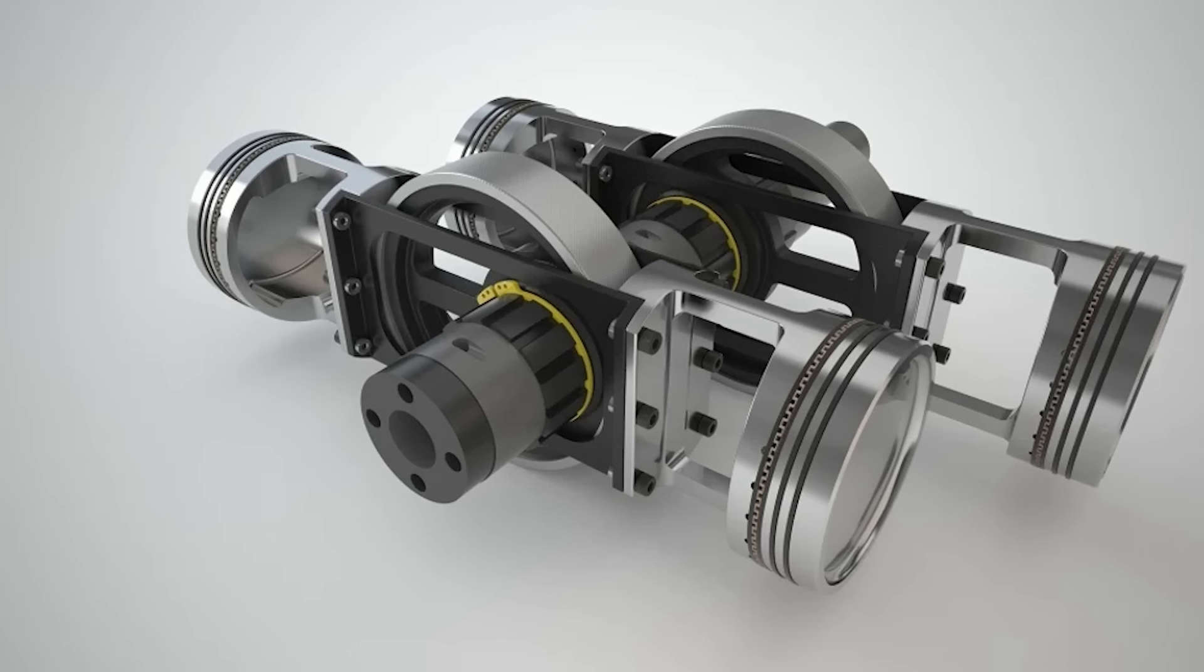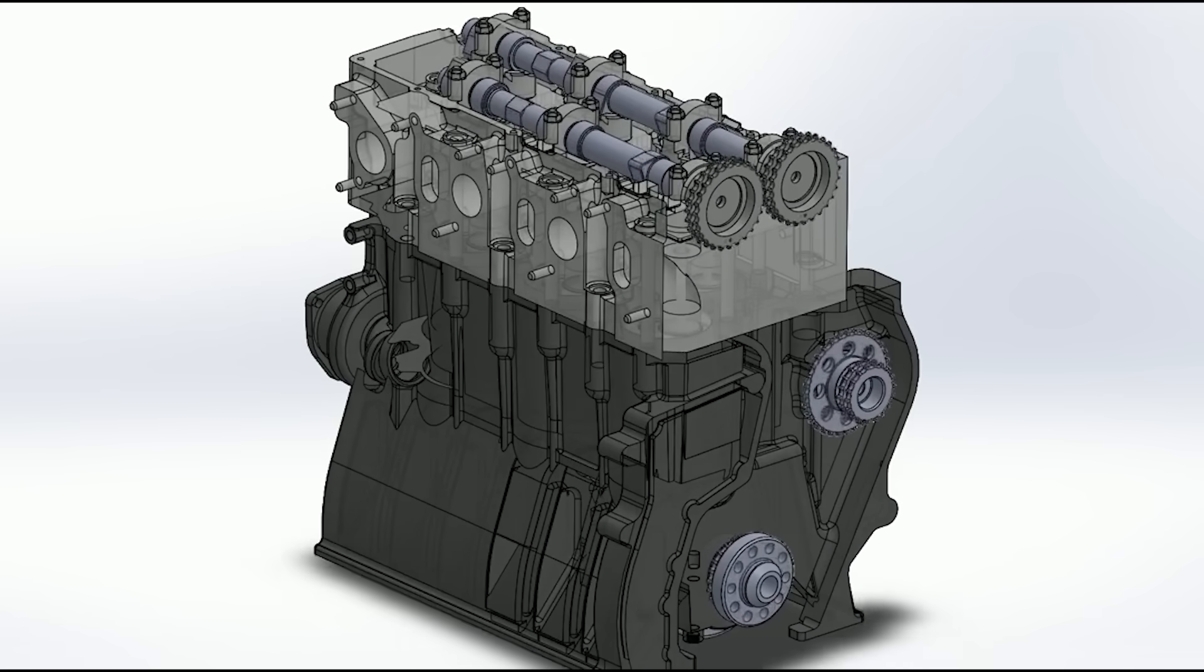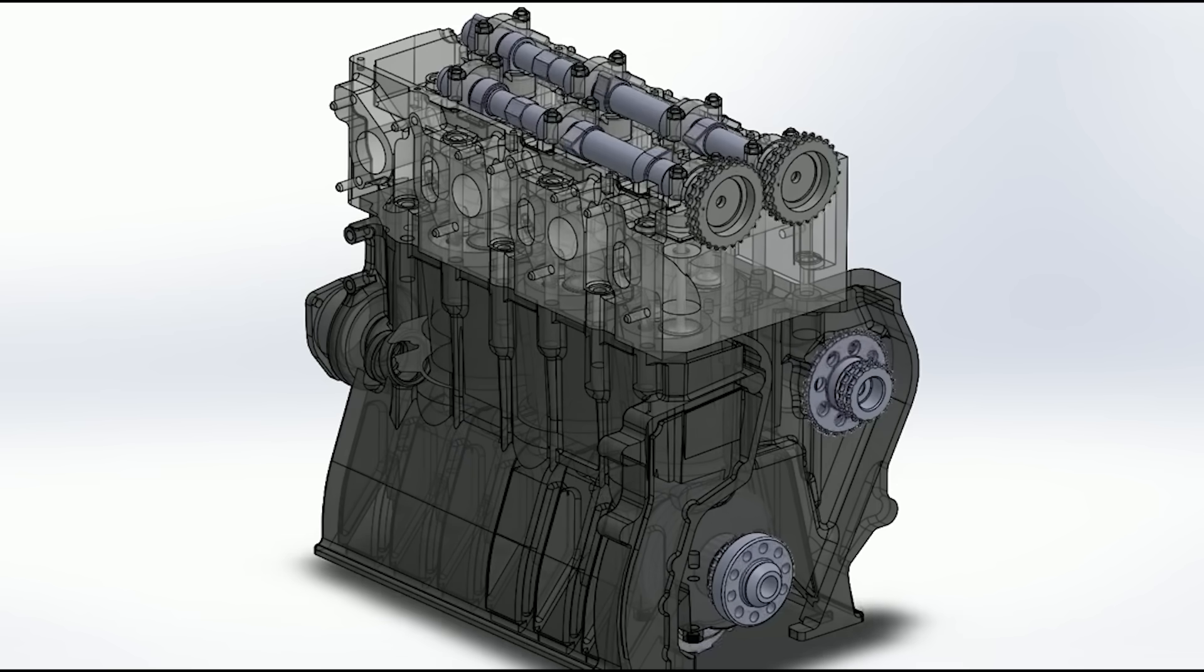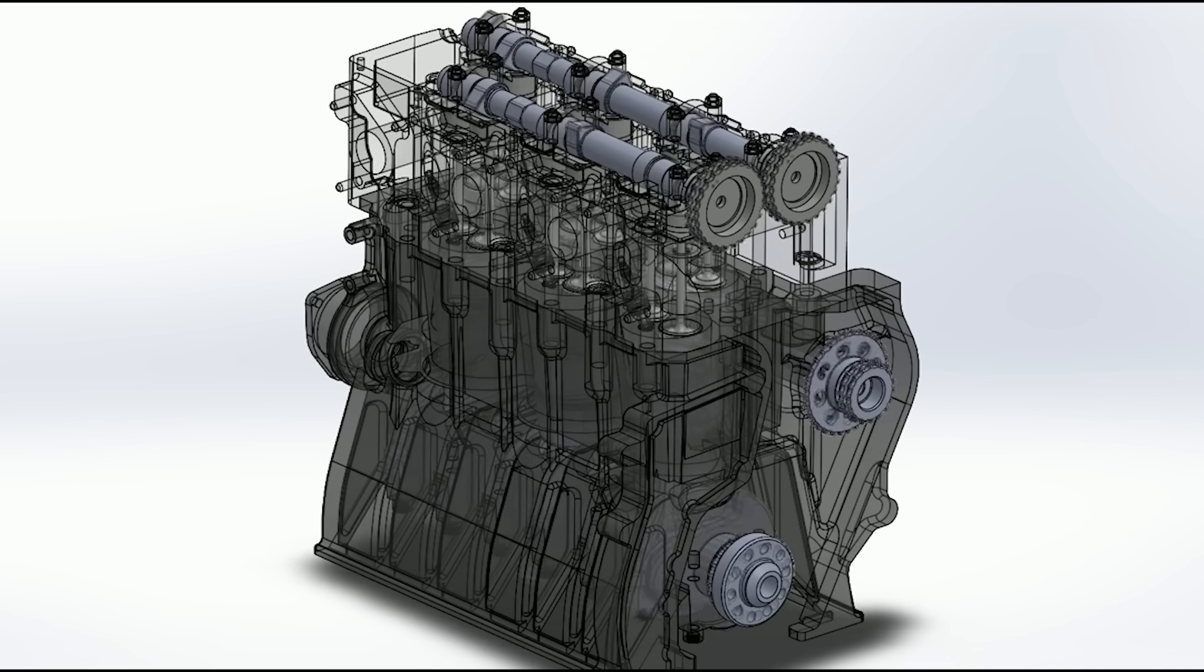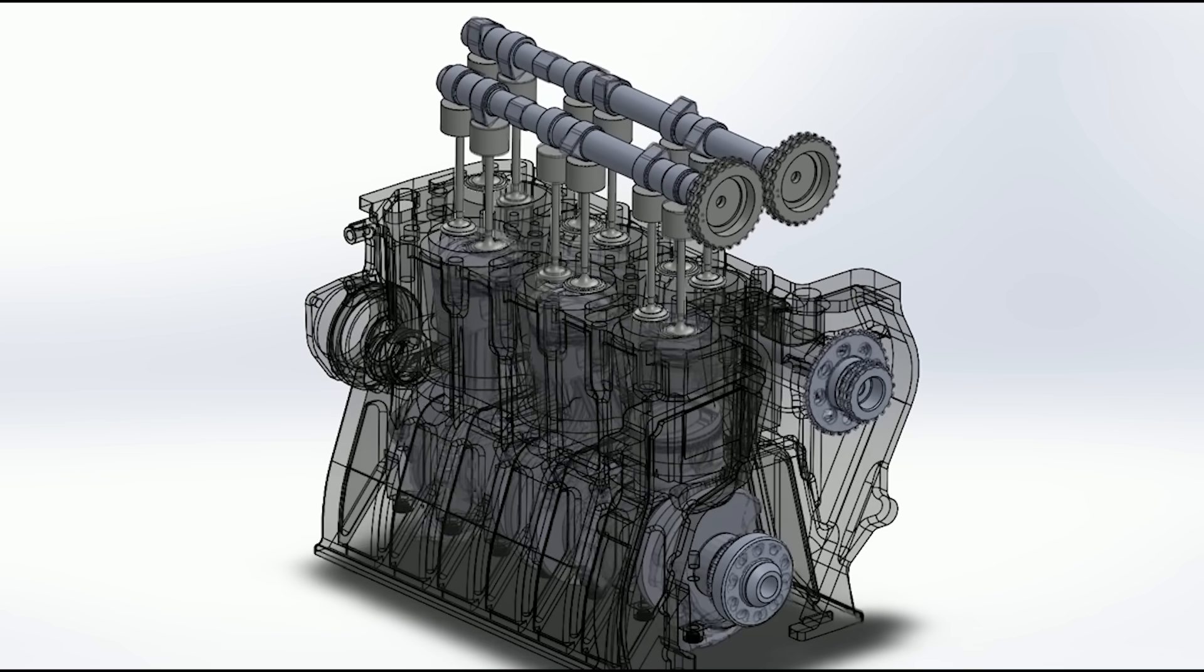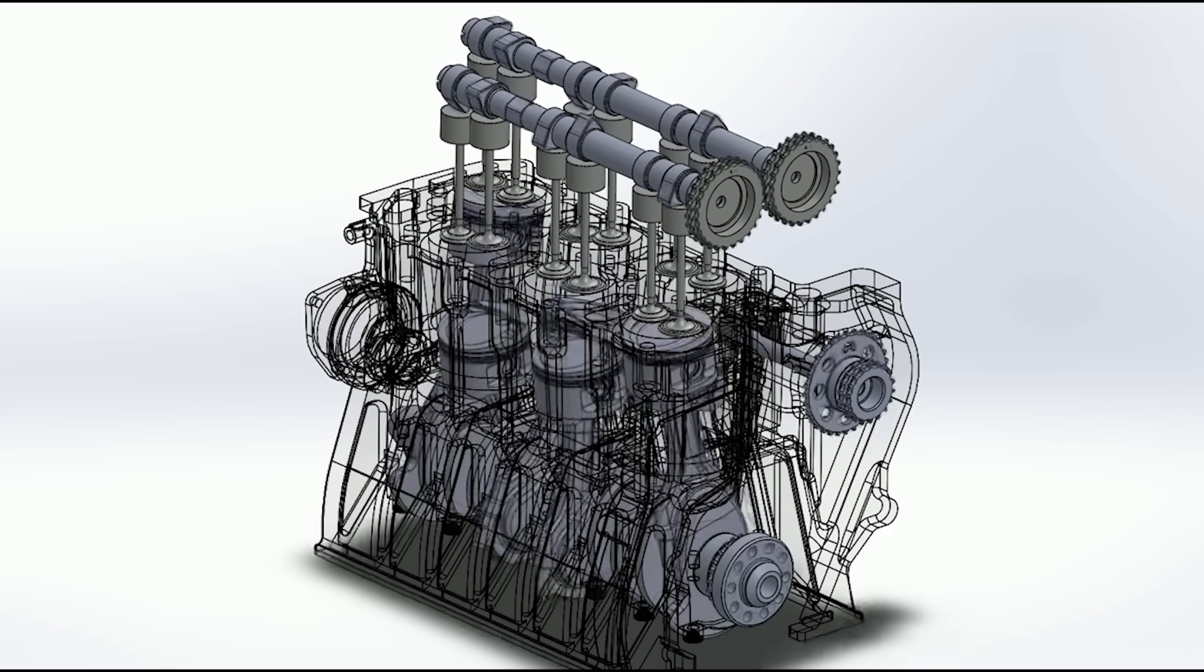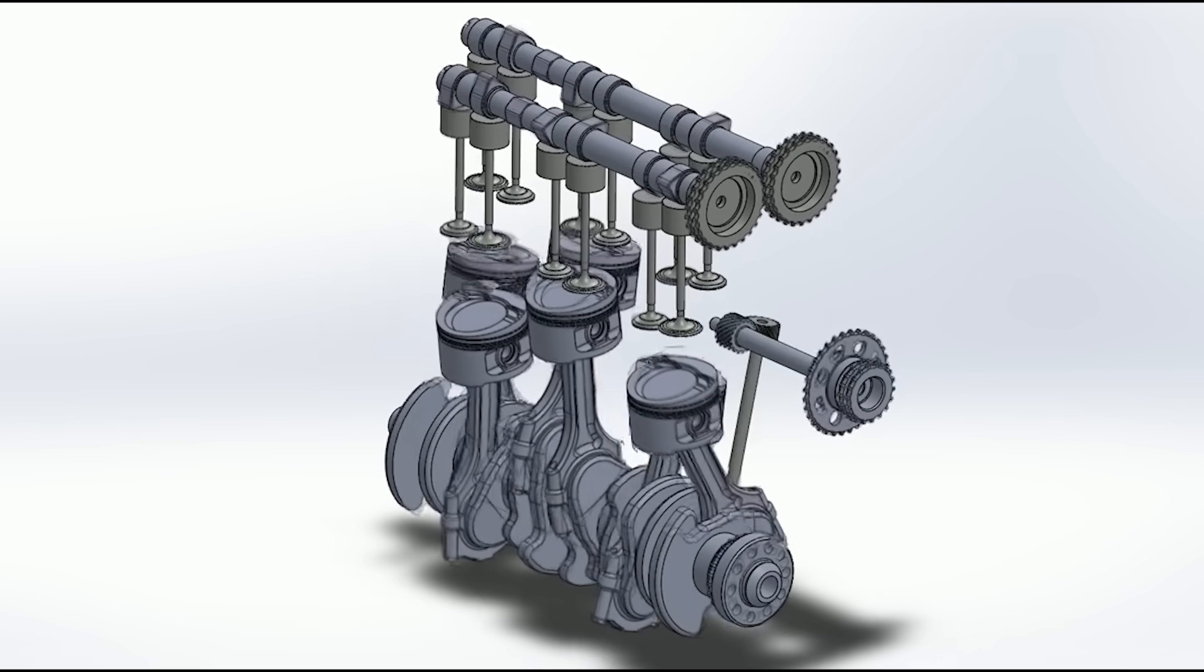But to appreciate what Wasey is doing, we first need to revisit classic internal combustion engine design. Since the dawn of the automotive age, engineers have wrestled with the inherent inefficiency and mechanical complexity of the crankshaft and connecting rod system. The piston moves up and down in a cylinder, but this linear motion must be converted into rotational motion to turn the wheels. The solution has always been the connecting rod, a metal arm linking the piston to the crankshaft offset to translate up and down piston travel into rotation. Sounds simple enough, but it introduces a big problem.